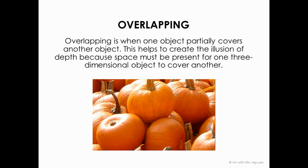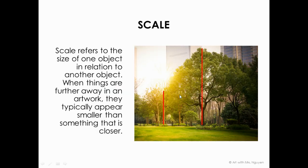The first one is overlapping. This may be something you already do in your artwork. It is when one object covers or appears to cover another in the picture. You can clearly see these pumpkins are toward the front and they're overlapping — you can barely even see the pumpkin behind. That creates the illusion of space in the image.